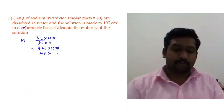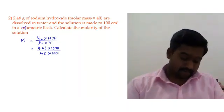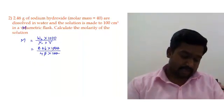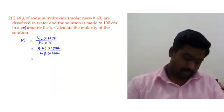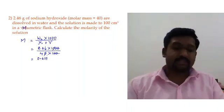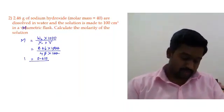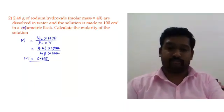The volume is 100 cm³. Simplifying by cancelling zeros, we get 0.615. So the molarity of this solution is 0.615 M.